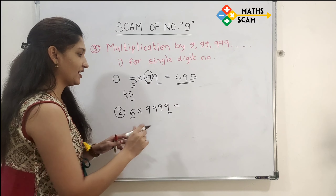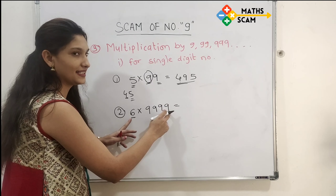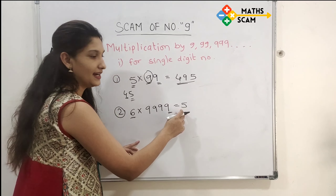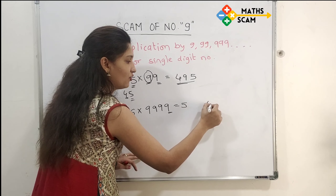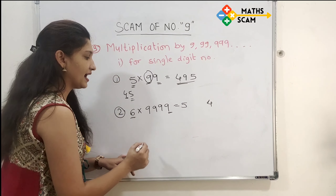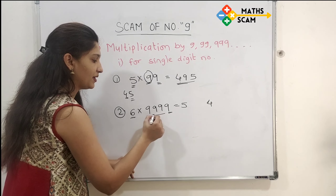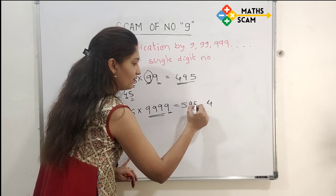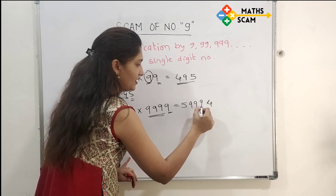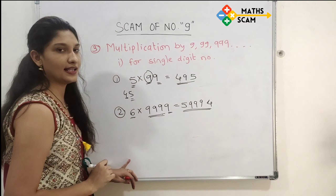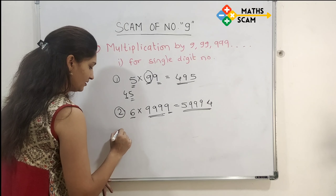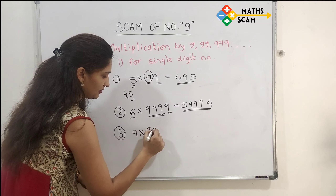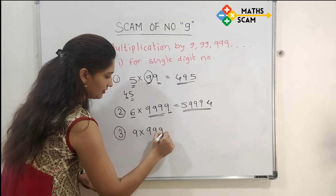Next example: 6 times 9999. Multiply 6 by the last digit 9: 9 times 6 is 54. Write 5 on the left side and 4 on the right side. How many 9s are remaining? Three. So write three 9s in the middle of 5 and 4. The answer is 59994.